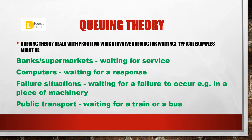Now, let's start with queuing theory. Queuing theory deals with the problem which involves queuing and waiting. Basically, we have a line — we have a bank. In all kinds of lines, we have a lot of persons. The problem is one person has to work at a time.